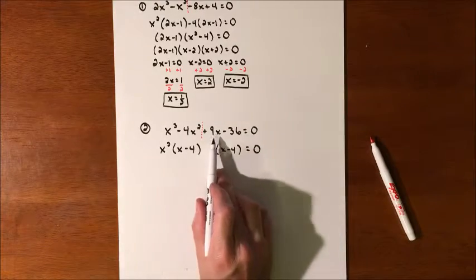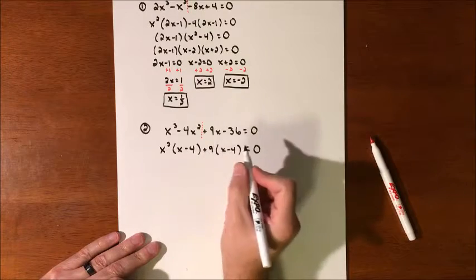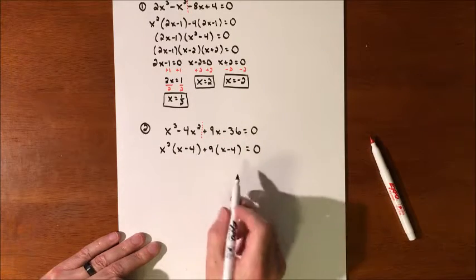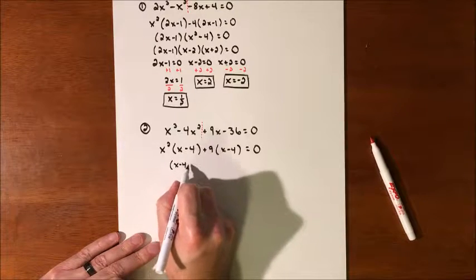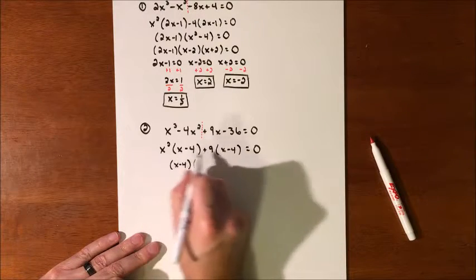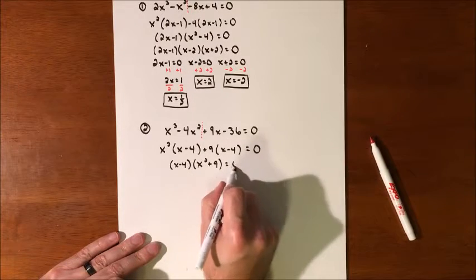So what can you factor out of a 9 to make an x and a 36 to make a 4? That's going to be a 9. So now, what does this group have? This term have in common with this term. They both have x minus 4s. So we would have an x squared plus 9 left over.